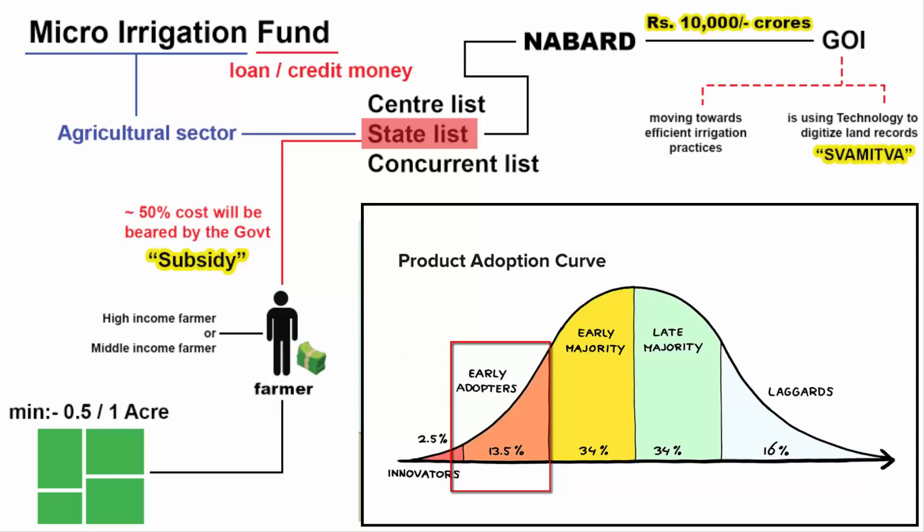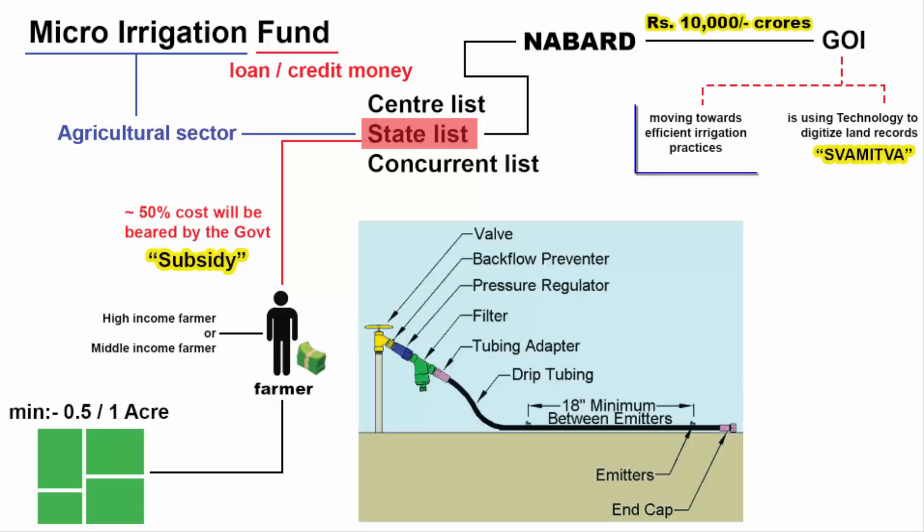To summarize: on one hand, the government, with the help of the Swamitva scheme, is digitizing rural land records and providing property cards. And on the other hand, the government is slowly moving towards efficient irrigation practices.